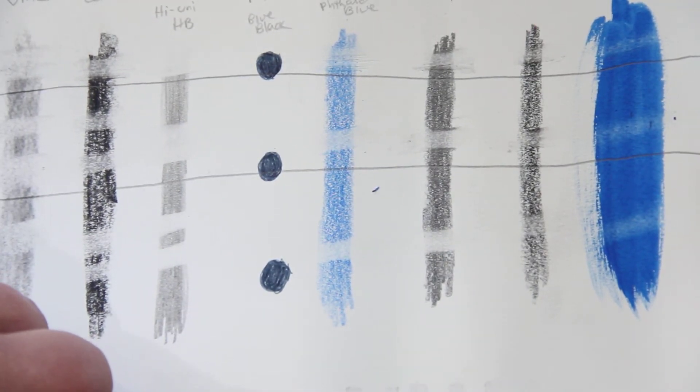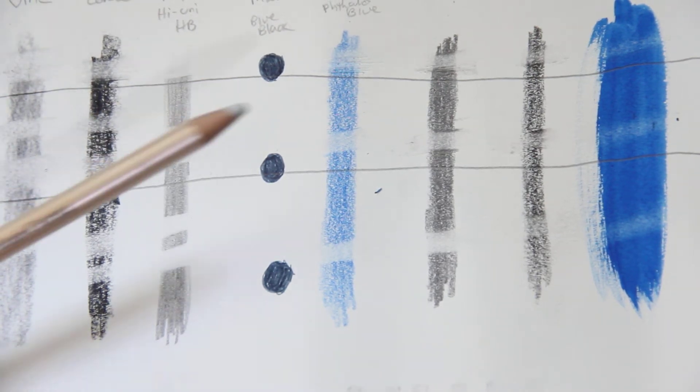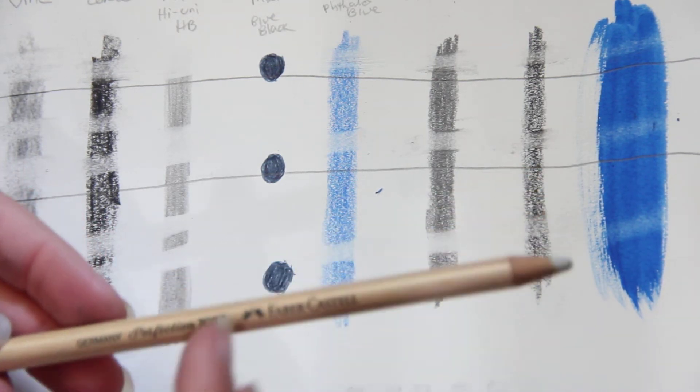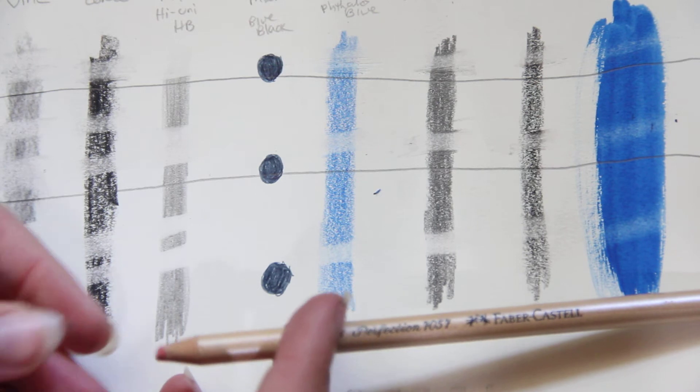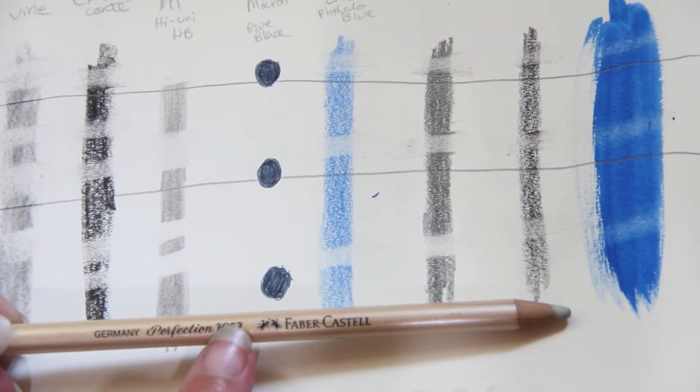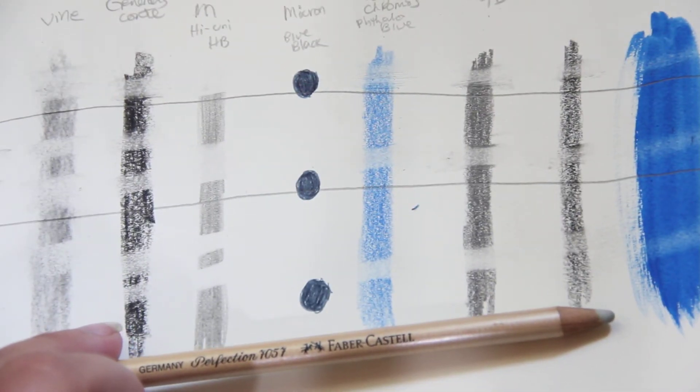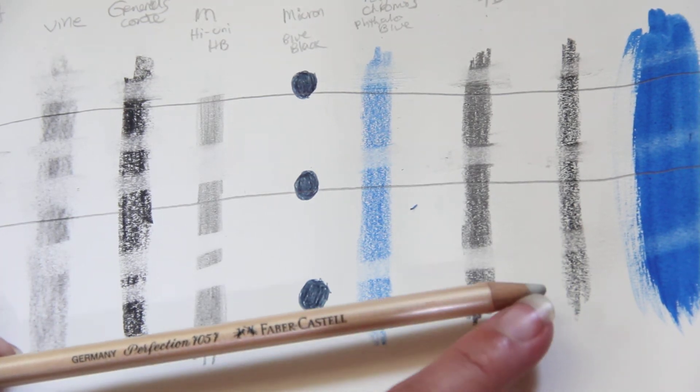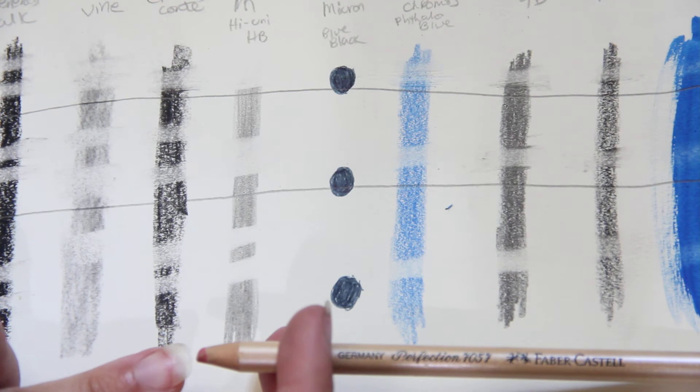So I think for erasability, the Faber Castell pencil eraser just does a hair better. Now I'm only using the pink end. The other end, this is the 7057 and it's a dual tip. The 7056 is just the pink eraser. For the life of me, I cannot get this white portion to work and perform. So I only use the pink tip, but you can see how flat it is.